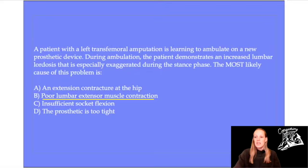Our second answer says poor lumbar extensor muscle contraction. If we have excessive lumbar lordosis, we're more likely to have tight lumbar extensor musculature. There's probably not any weakness in the lumbar extensors if we're in excessive lumbar extension. This answer doesn't really make sense, so let's eliminate it.